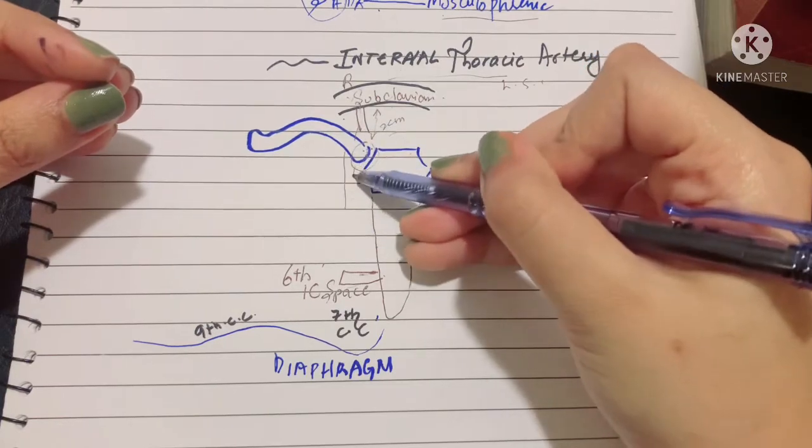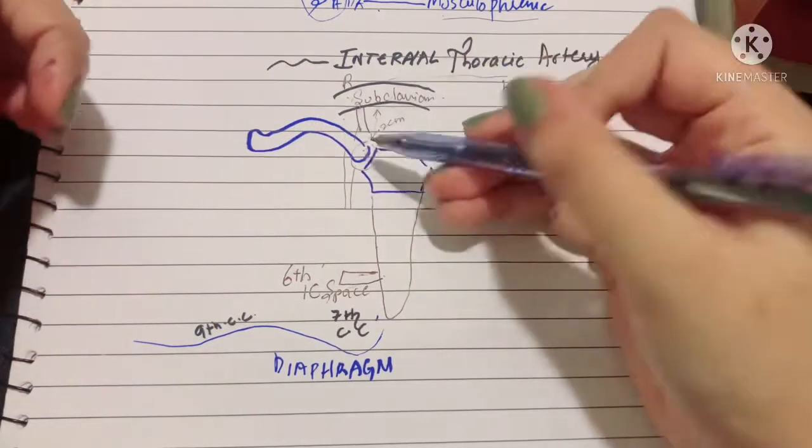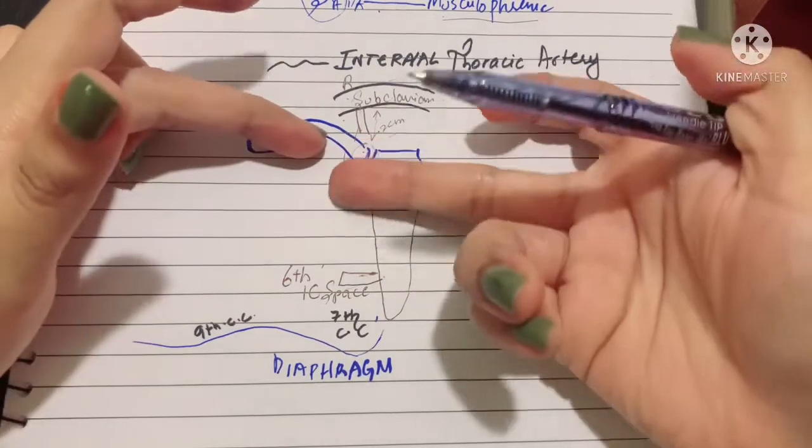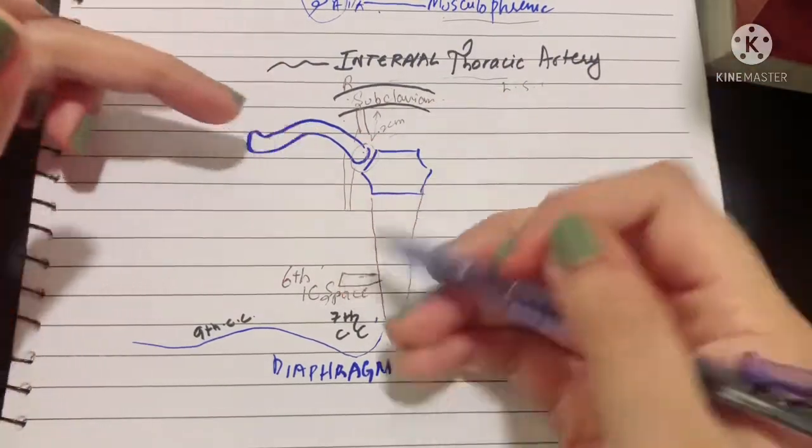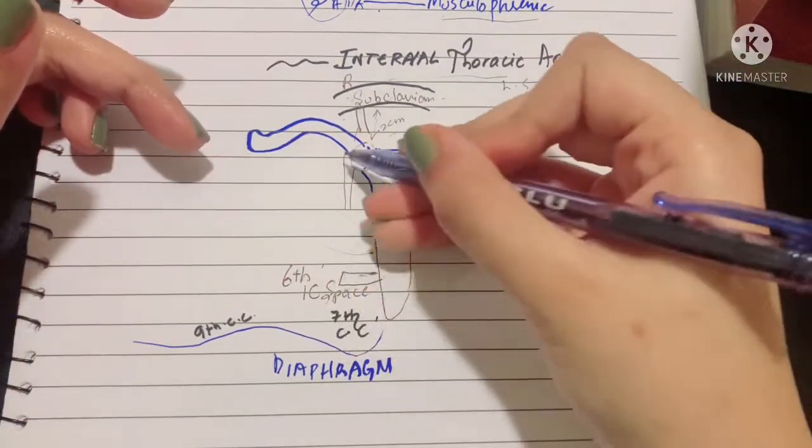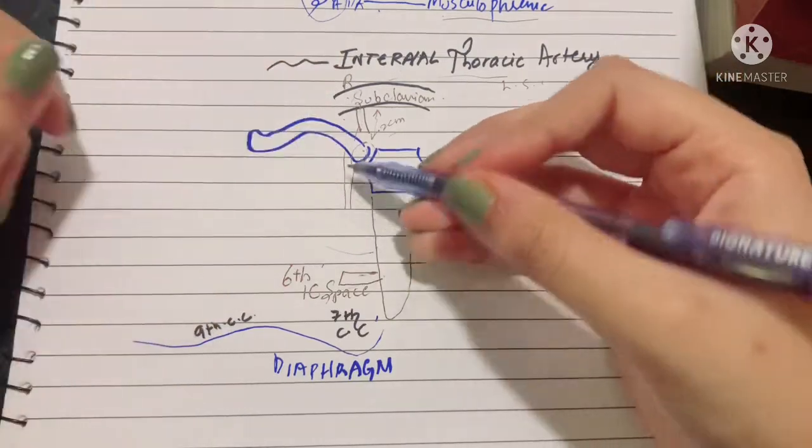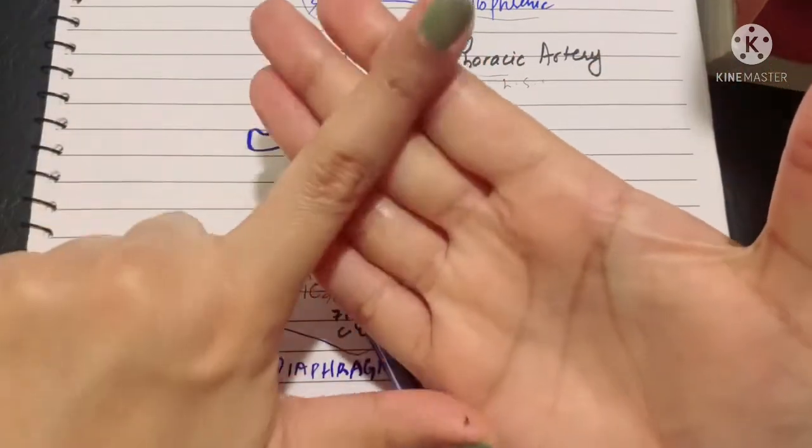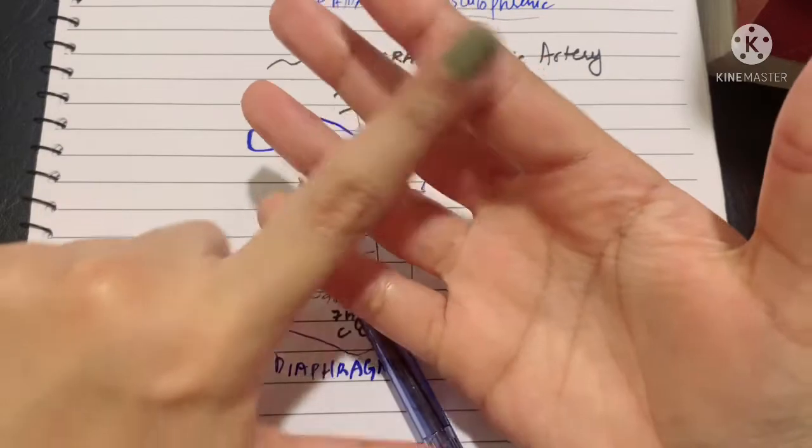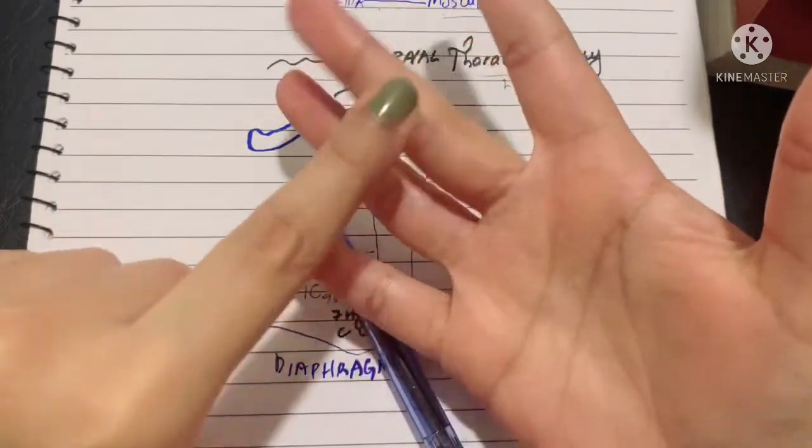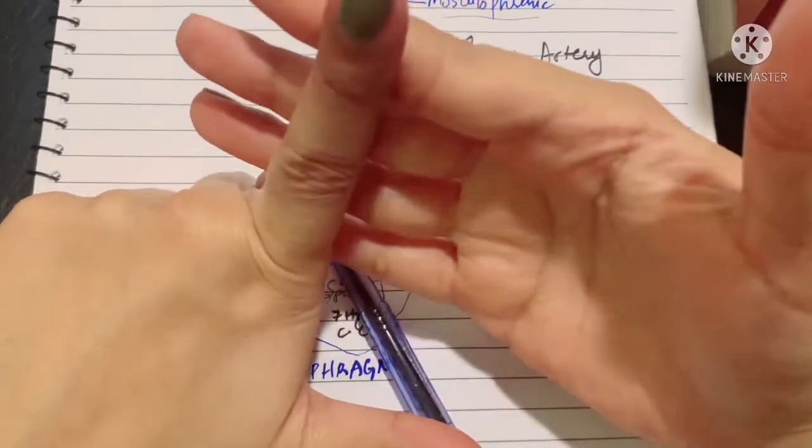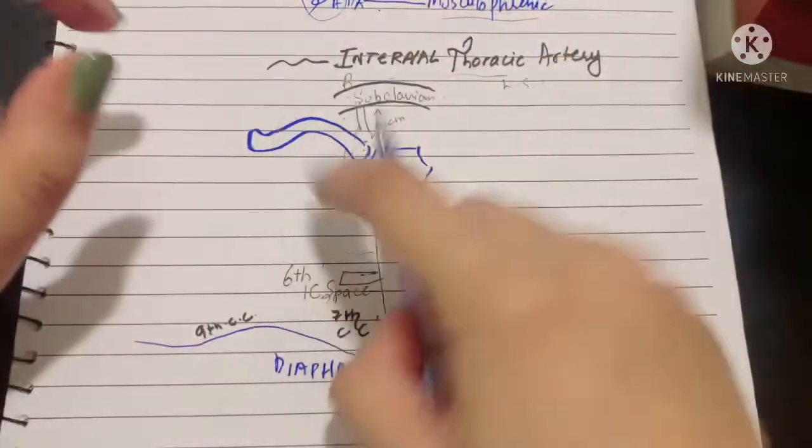All the way down behind the sternal end of the clavicle, behind six costal cartilages—it is lying posterior to them, clung to the thoracic wall. It is running behind the six costal cartilages, downwards and medially.